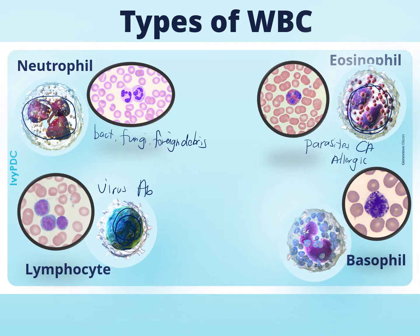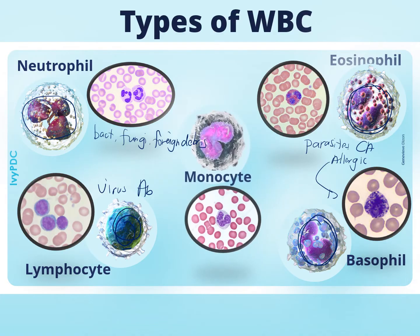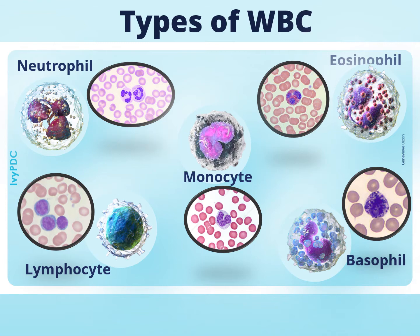The next type is the basophil, which is also bilobed like the eosinophil but has distinct dark blue or purple granules; basophils are involved in allergic reactions. The last type is the monocyte, which has a kidney-shaped nucleus; monocytes function to clean up damaged cells.